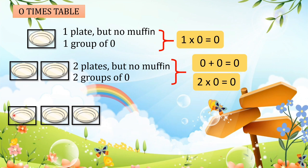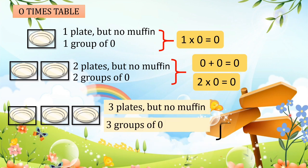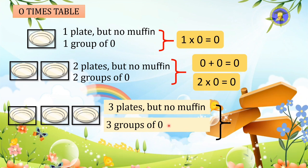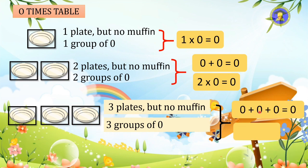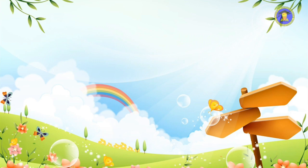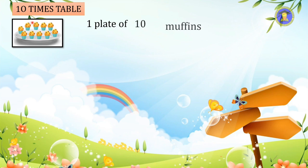Here again we have three plates but there is no muffin inside. We can still say there are three groups of zero. Using repeated addition: zero plus zero plus zero equals zero. So three times zero equals zero.